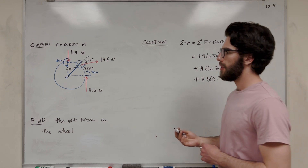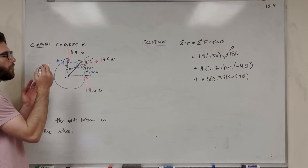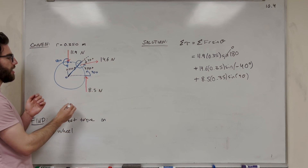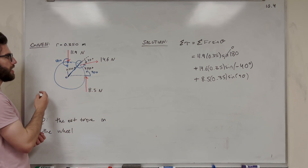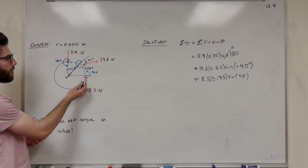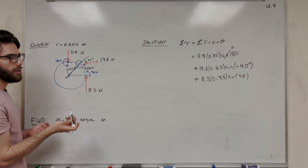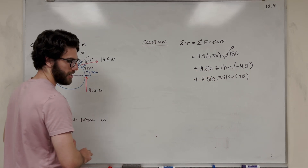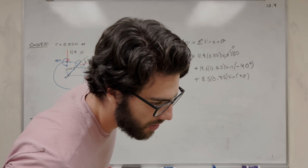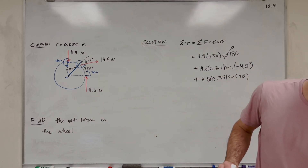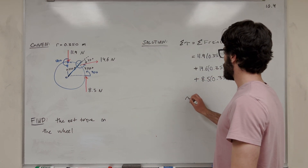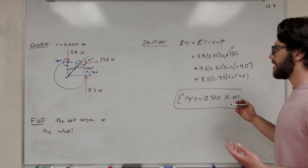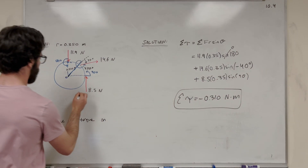Sine of negative 40 gives you a negative ratio. So if the force is making us rotate clockwise, it's going to be negative. We can look at this 14.6 newton force — it's making us want to rotate clockwise, and because clockwise is negative, it's going to give us a negative torque. That being said, this 8.5 newton force is at a 90 degree angle and it's pushing us counterclockwise, which is a positive value. So we're basically subtracting one from the other, and the answer is negative 0.310 newton meters. So the sum of the torques is equal to negative 0.310 newton meters — that's the net torque acting in our system. It's negative, so that means we're going to be rotating clockwise.